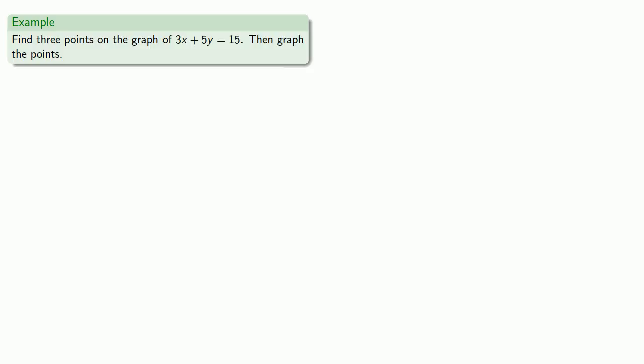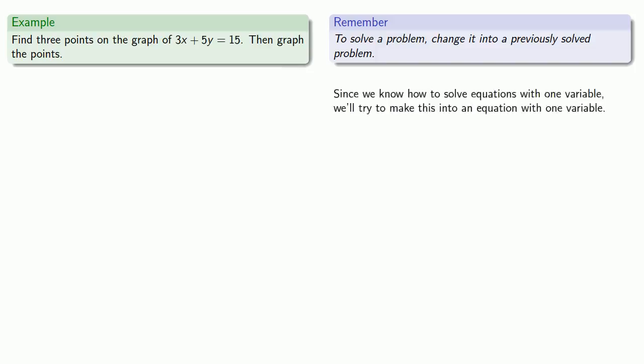To do this, we'll employ a time-honored strategy in mathematics to solve a problem: change it into a previously solved problem. Since we know how to solve equations with one variable, we'll try to make this into an equation with one variable. One way to do that is to pick a value for one variable, and then replace and solve.